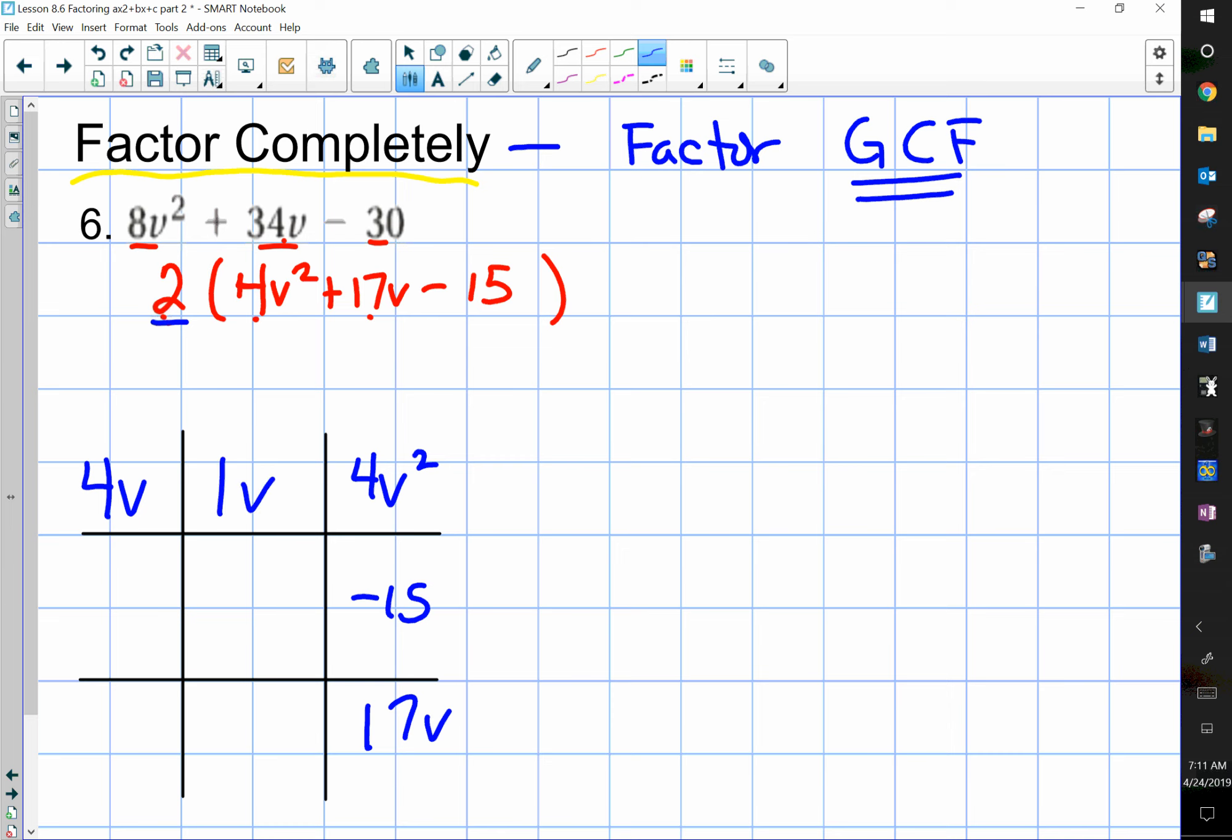To get negative 15, one of the numbers has to be positive, and one has to be negative. And 15 is 3 times 5. 4v times 5 is 20v. 1 times negative 3 is negative 3v. And when you add those together, you get 17v.